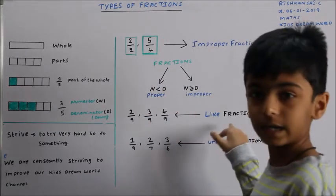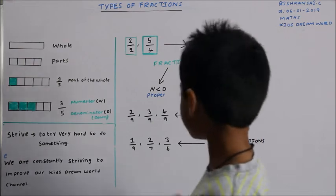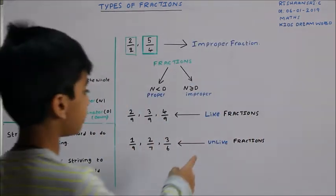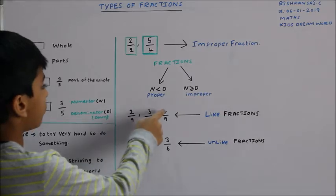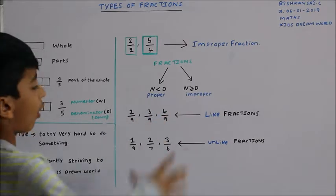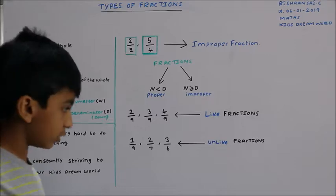So this is the like fraction. Like fraction means like 2/9, 3/9, and 4/9. All the denominators will be the same for like fractions.